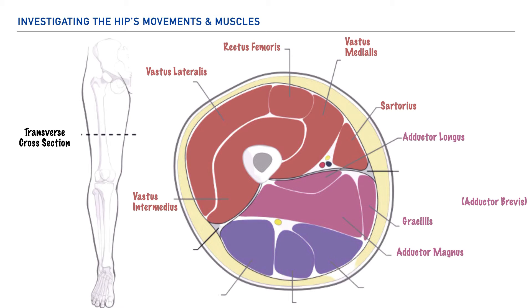Lastly is our posterior compartment, and it's here that we'll find the hamstring musculature, which includes the biceps femoris, the semitendinosus, and the semimembranosus muscles.